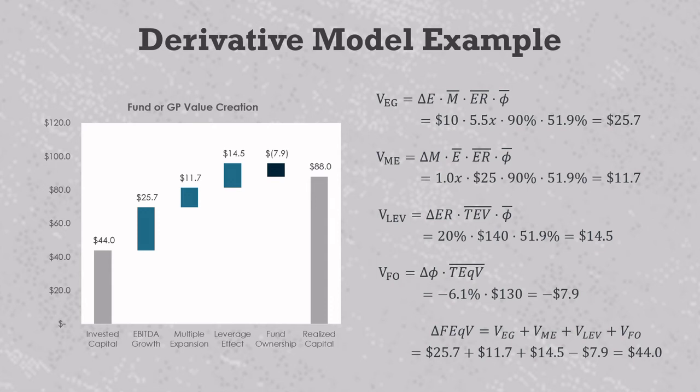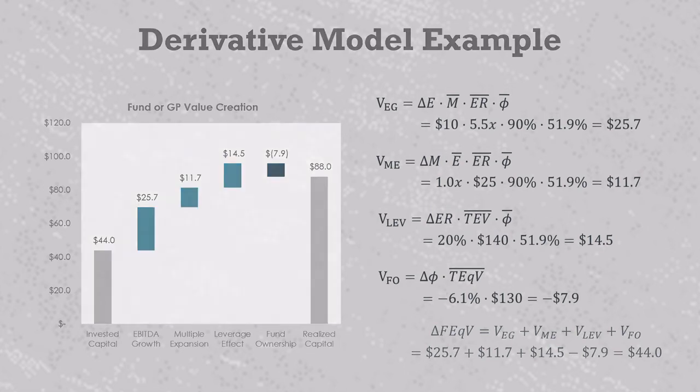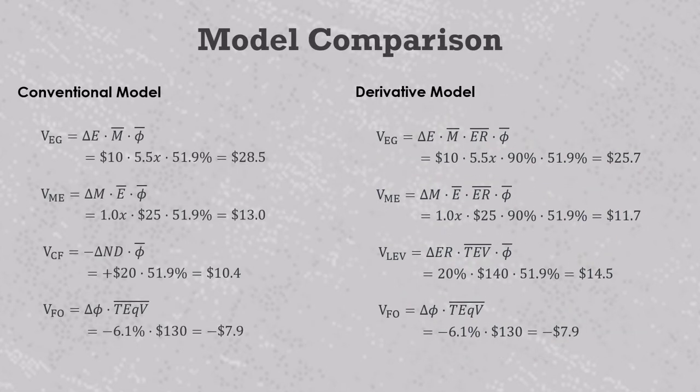Let's compare these numbers to what would have been generated from the conventional model of value creation that we described in VC102. In the derivative model, EBITDA growth and multiple expansion have this extra term for the average equity ratio. Since it's equal to 90% for this deal, the derivative model value drivers are 10% lower than what they would have been in the conventional model.